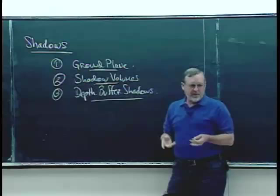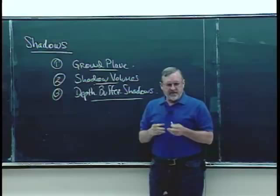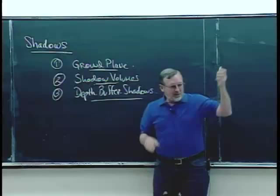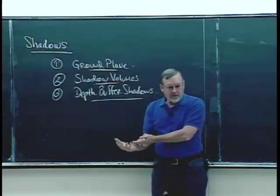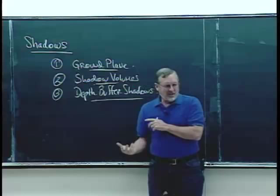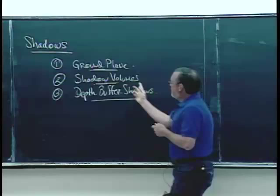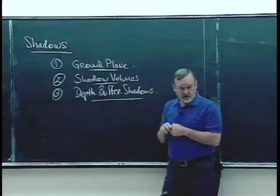Shadow volumes is the one that everybody wants to use but nobody can figure out how to use. Effectively, if you look at something from the light source and there's something in the way, there's a volume projected out, and things inside that volume are in shadow. When we view these things, we want to check whether they're inside one of these volumes or not. The problem is it takes a huge amount of extra storage.